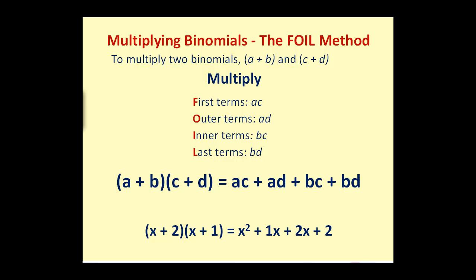In the last video, we did multiply binomials. There's a method called the FOIL method to multiply two binomials together in the form of the quantity A plus B and the quantity C plus D. The first product would be the product of the first terms, or A times C. Because it's the first term in each binomial, they label that F, or first.